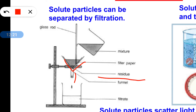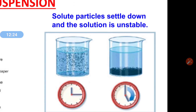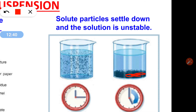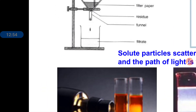If we take a suspension — for example sand and water — in a beaker, after some time you will see that the solid has settled down at the bottom. I am marking with red color to show that solid settles down at the bottom after some time. This is an example of suspension.